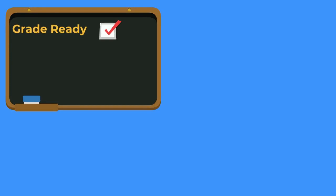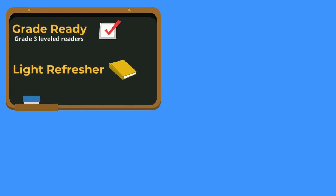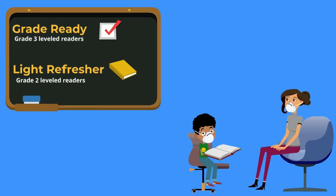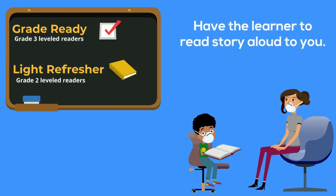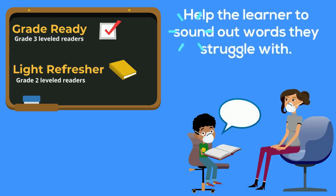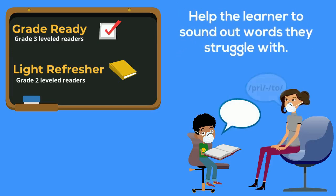Grade ready learners can use a grade 3 leveled reader, but learners in need of a light refresher should use a grade 2 leveled reader. Have the learner read the story aloud to you, and help the learner sound out the difficult words they struggle to read.